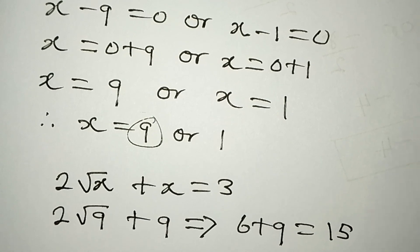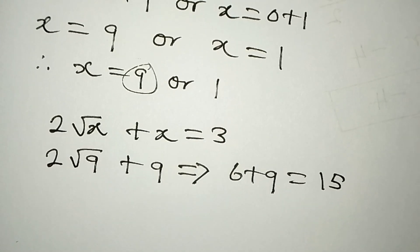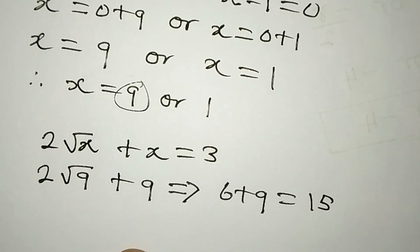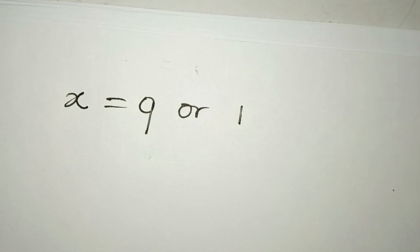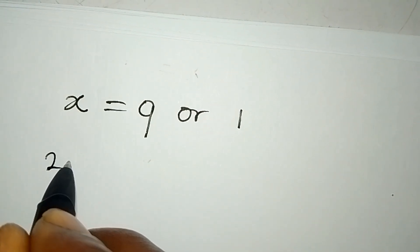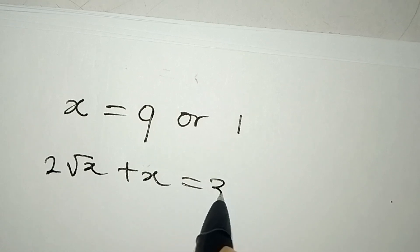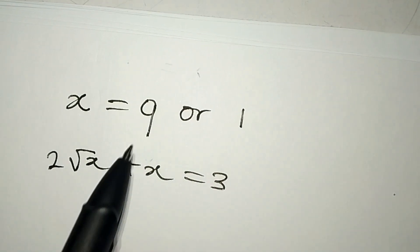The next value is x = 1. Let's test this. We have 2√x + x = 3, and we know x = 9